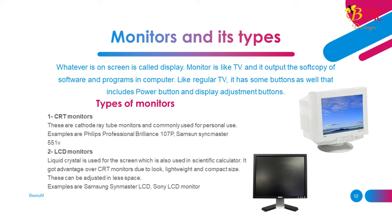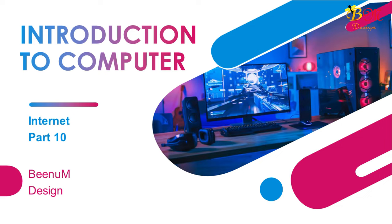Monitors and its types: Whatever is on the screen is called display. A monitor is like a TV and it outputs the soft copy of software and programs in the computer. Like a regular TV, it has buttons including a power button and display adjustment buttons. Types of monitors: 1. CRT monitors — cathode ray tube monitors, commonly used for personal use. Examples: Philips Professional Brilliance 107P, Samsung SyncMaster 551V. 2. LCD monitors — liquid crystal is used for the screen. LCD monitors have an advantage over CRT due to their look, lightweight, and compact size. Examples: Samsung SyncMaster LCD, Sony LCD monitor.